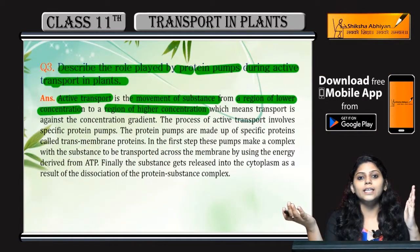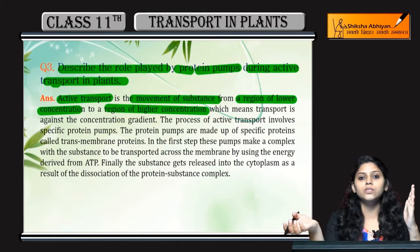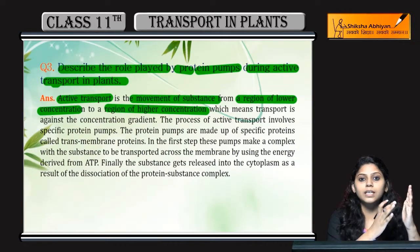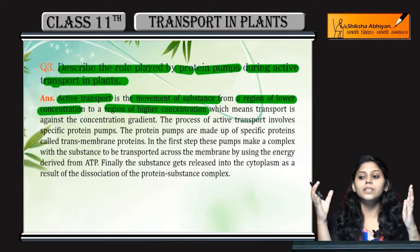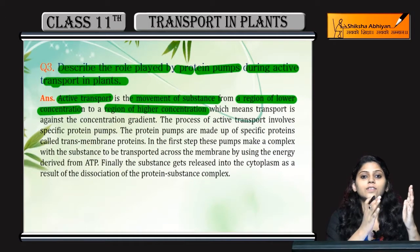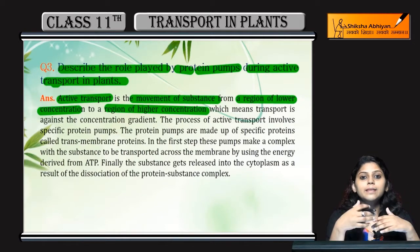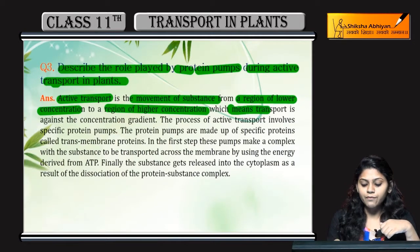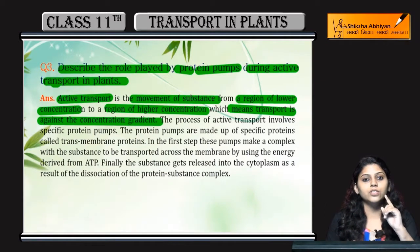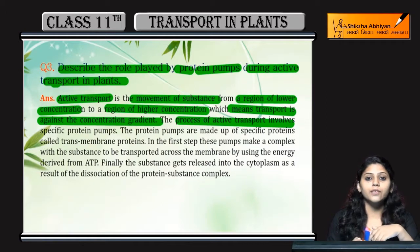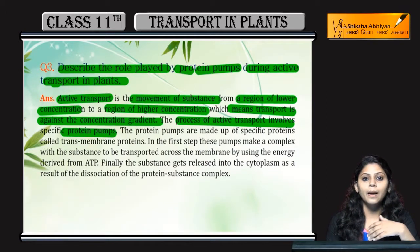Jaise humne pahle perfume ka example liya tha — maan lo humne perfume is side se spray kiya hai, toh woh is side ko jaana chahiye kyunki yaha perfume ki concentration zero ya low hai. But agar hame yaha se lower concentration se higher concentration tak le ke jaana hai, then active transport karana padega, against the concentration gradient, tab movement hogi. Which means transport is against the concentration gradient. Active transport mein involve hote hain specific protein pumps.